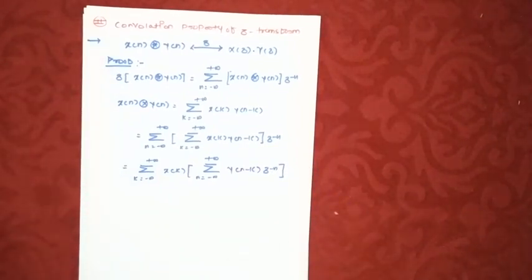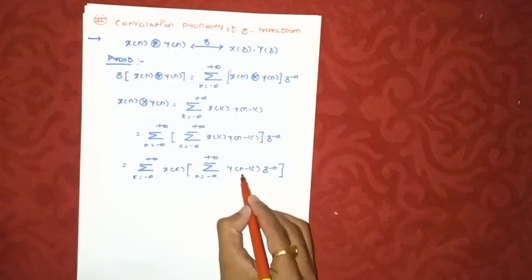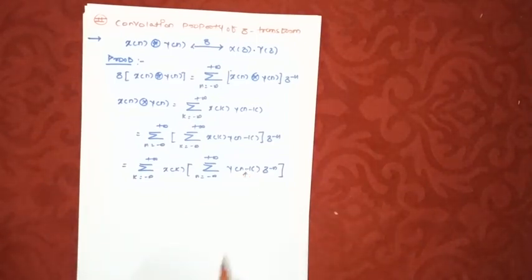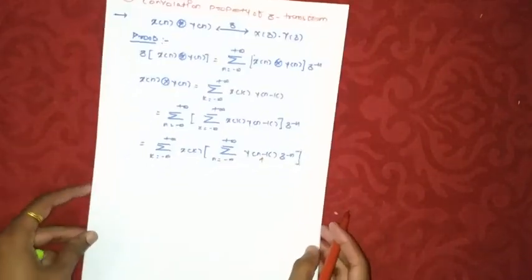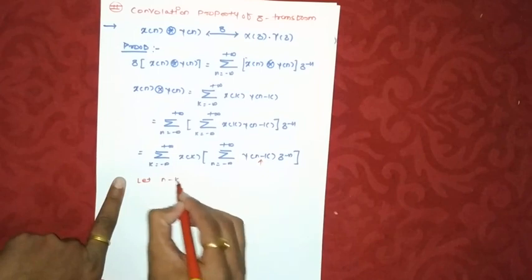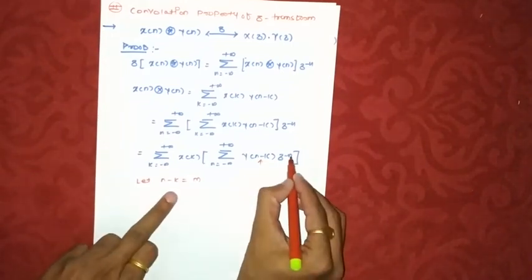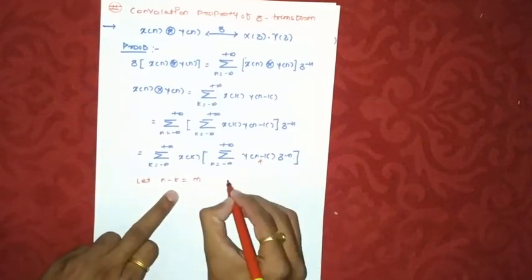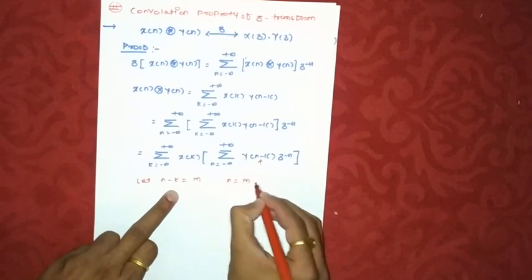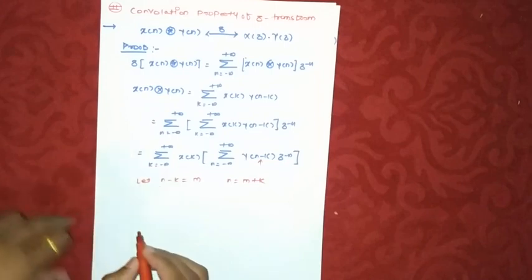And next step, in order to simplify this, always remember one thing. If you want to find z transform or any transform, we need a single variable function. Here it is n minus k. So we will replace this by single variable. So I am writing it here. Let n minus k equal to m. This is an important step. So I can write n equals m plus k and this summation will change from m minus infinity to plus infinity.